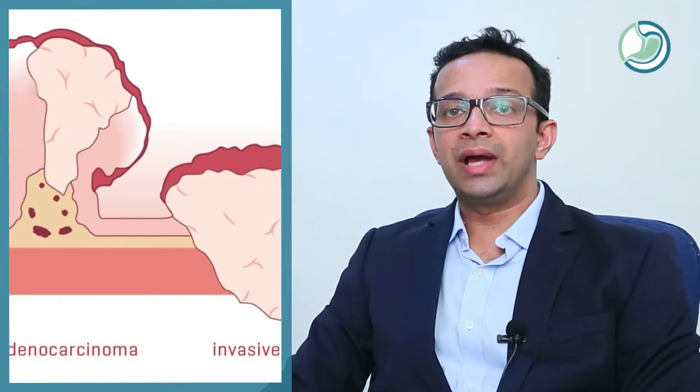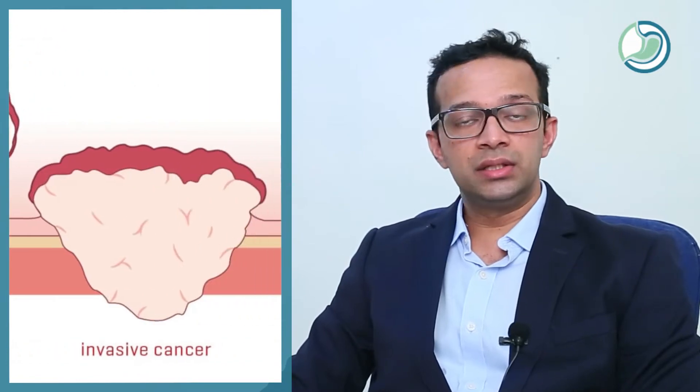Once a polyp transforms into cancer, it does what a cancer does. It basically invades the wall of the intestine, it invades the lymph nodes which are small glands which drain the part of the bowel, and then the cancer cells can even spread in the blood and spread to distant organs like the liver, lung, bone or the brain. When the cancer spreads to different organs apart from the organ of origin, they are called metastases.